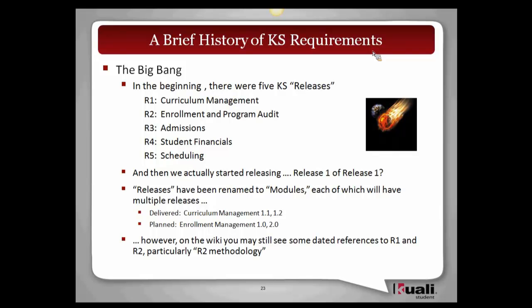The big bang. In the beginning, we envisioned five QALY student releases. These were curriculum management — if you look at our old product management materials, you'll see something we called R1, which is curriculum management. Then release two was enrollment and program audits. We had admissions, student financials, and scheduling. And then we actually started releasing products and realized there was a flaw in our naming convention because we were going to have multiple releases of releases, which got a little cumbersome.